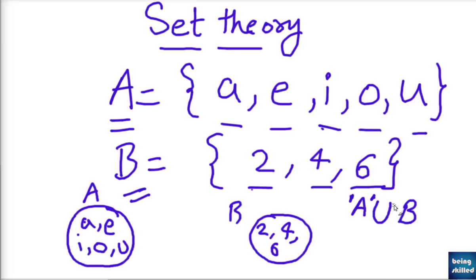Now if you want to find union of it, union of two sets, so the symbol of union is in the shape of U. And what do we mean by union? So union of any set will contain each and every element of the sets which we are considering.